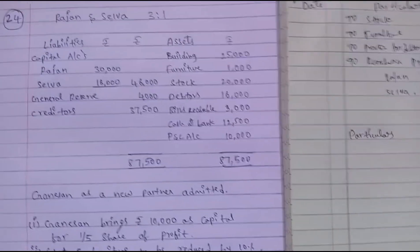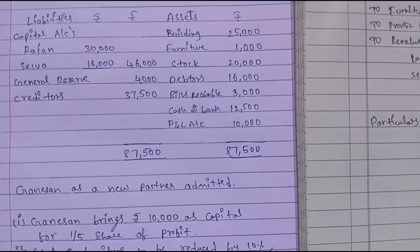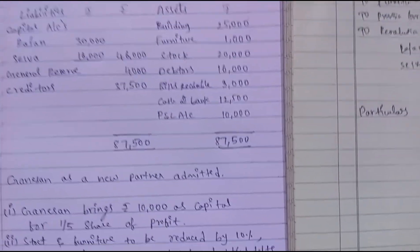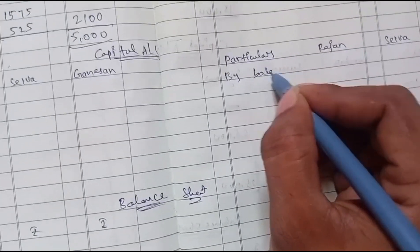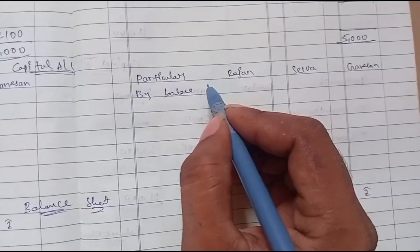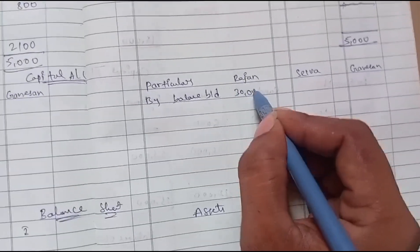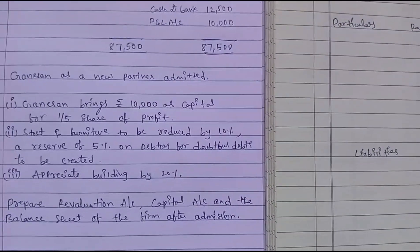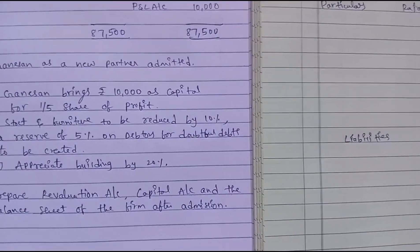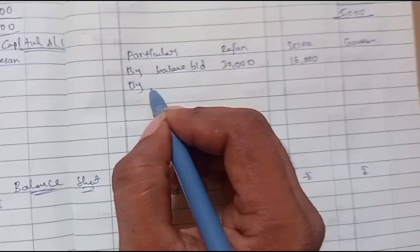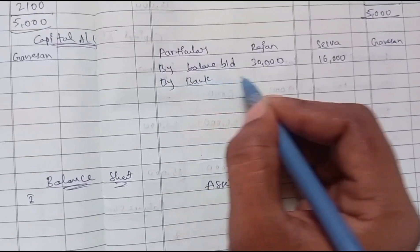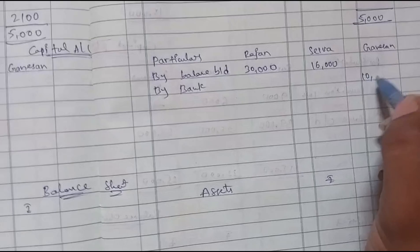Next is the capital account. From the balance sheet, Rajan's capital is 30,000 and Selva's capital is 16,000. These are entered on the credit side as balance brought down. New partner Ganeshan is admitted; he brings 10,000 capital in cash, so: Bank — Ganeshan 10,000.